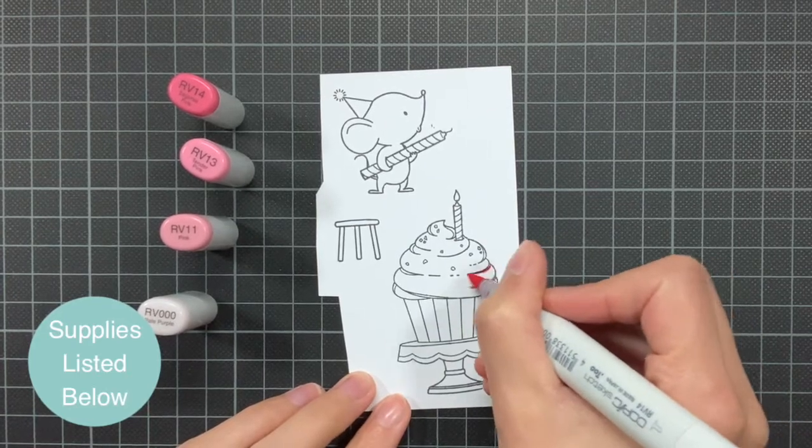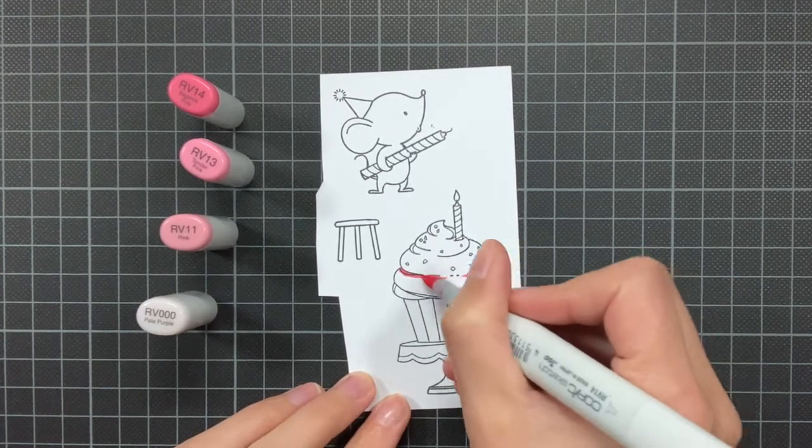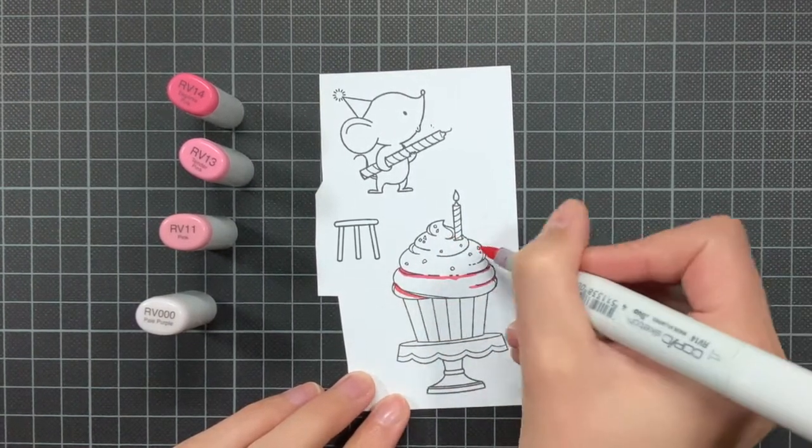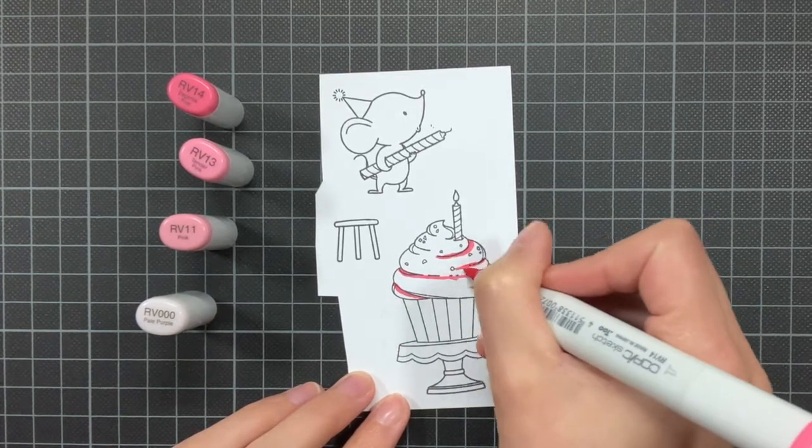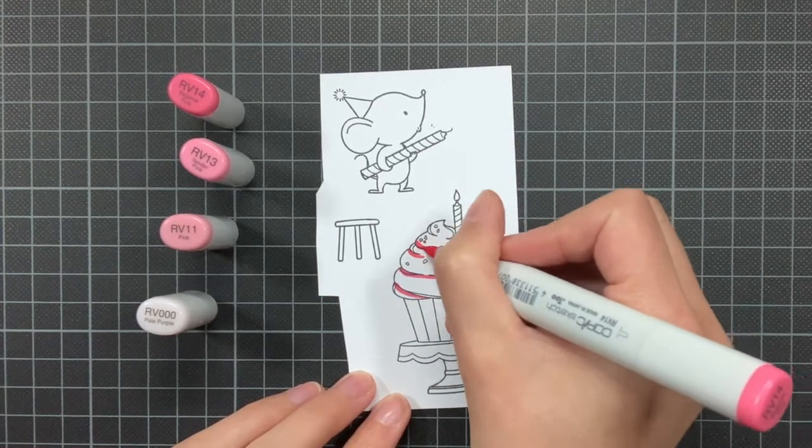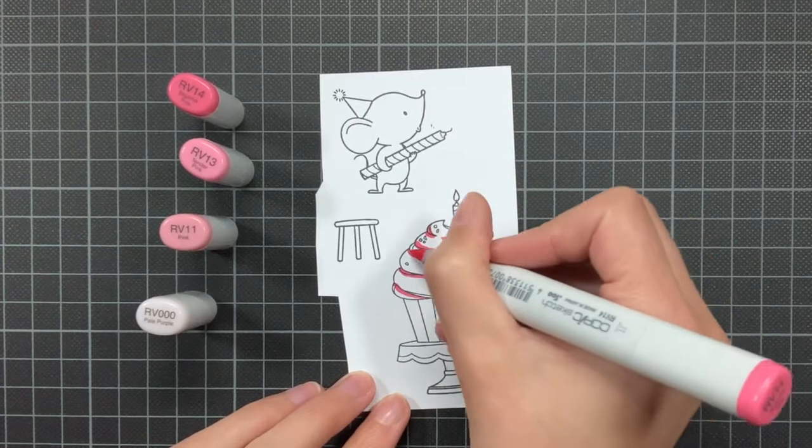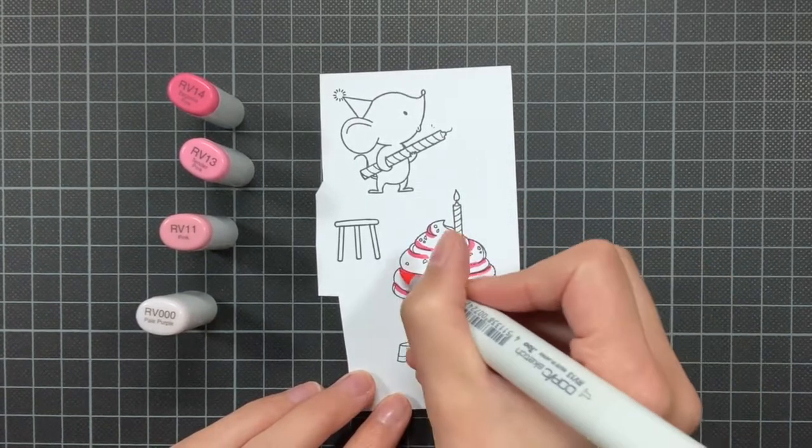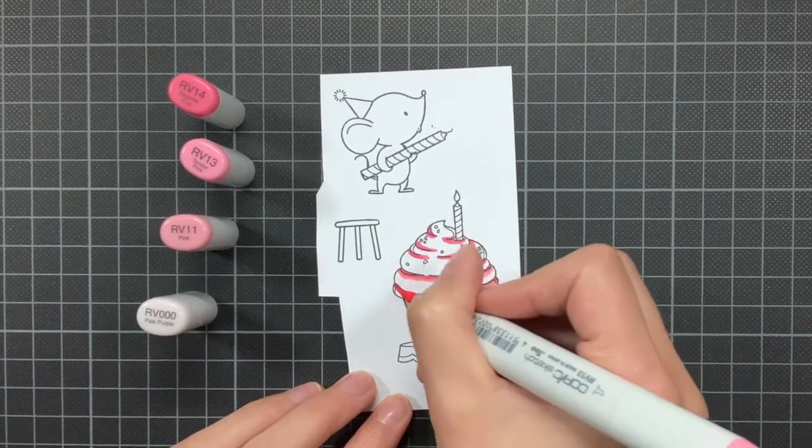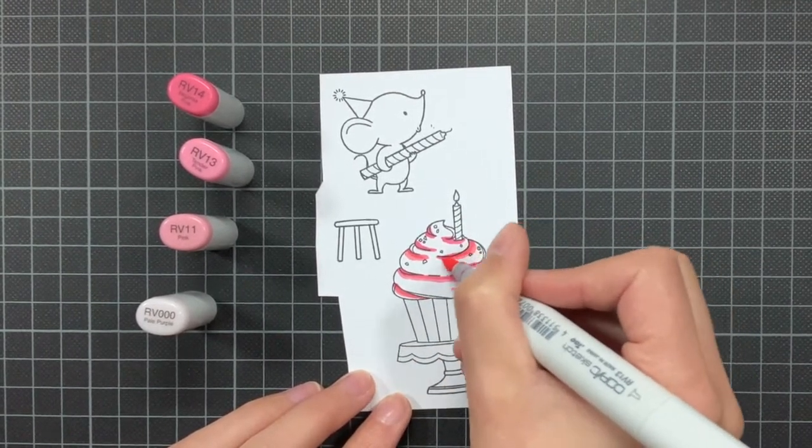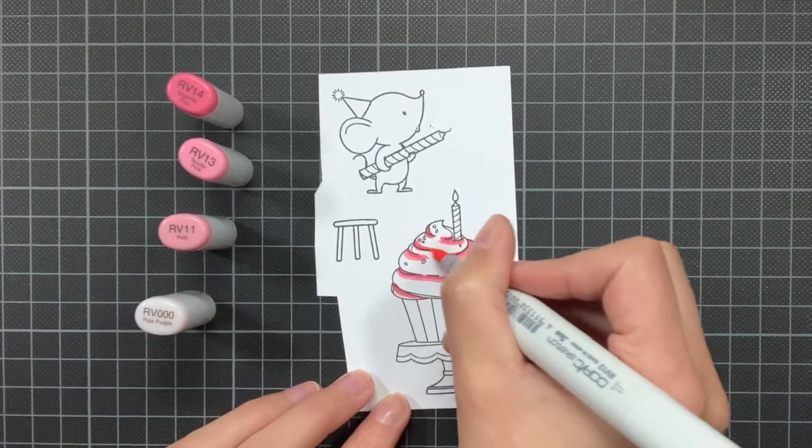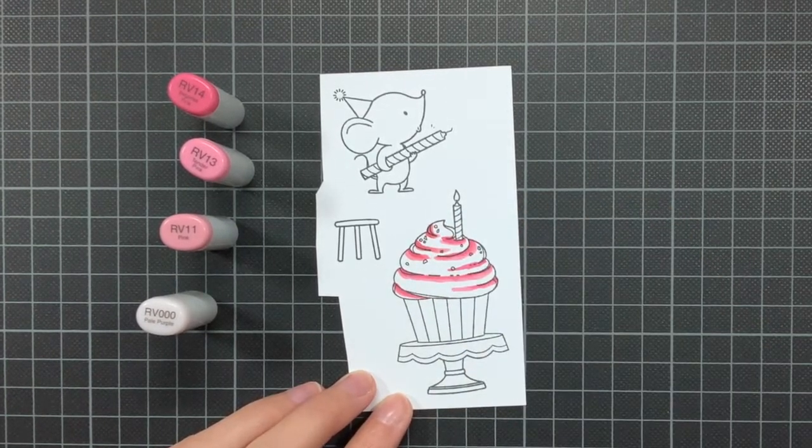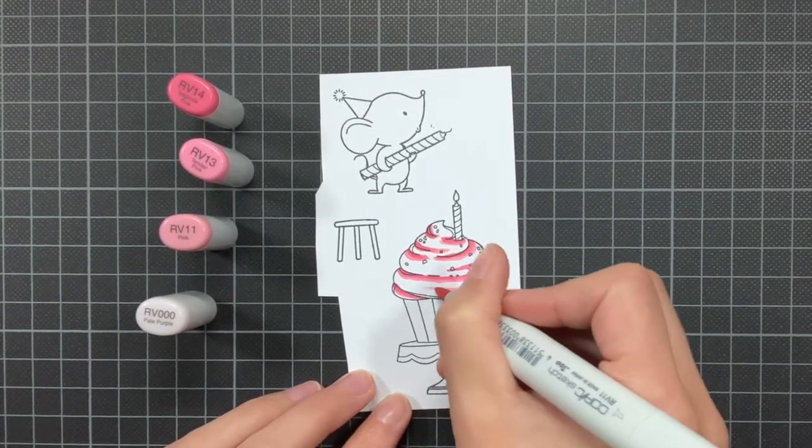It features the My Stay to Celebrate stamp set from MFT, which has this cute cupcake and the little mouse. This shaker card is actually an edge-to-edge shaker card or a flat shaker card, and it contains a lot of confetti and also sprinkles. So the sequins together with the cupcake make this card perfect for the current food and drinks challenge.